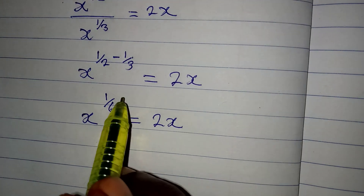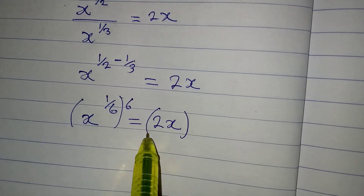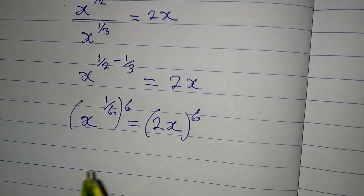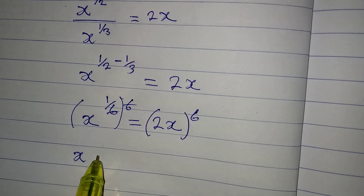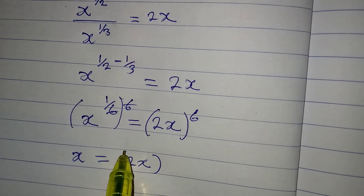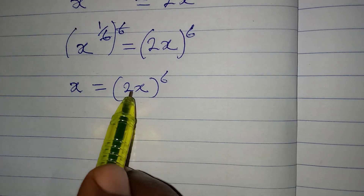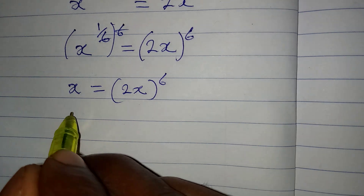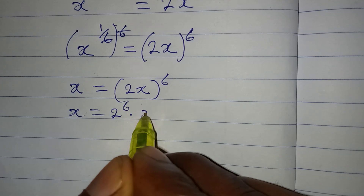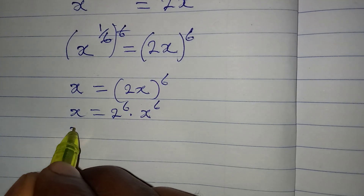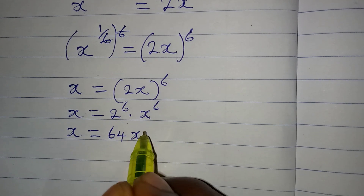The next step is to remove the power, so I multiply the power by 6 — the whole expression is raised to the power of 6. The powers cancel, and x equals (2x) to the power of 6. This means both 2 and x are raised to the power of 6, so x equals 2 to the power of 6 multiplied by x to the power of 6, which gives x equals 64x to the power of 6.